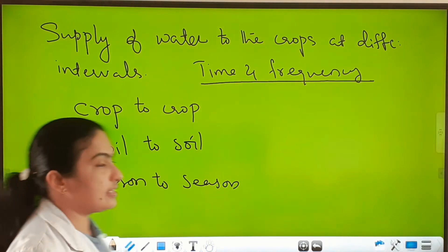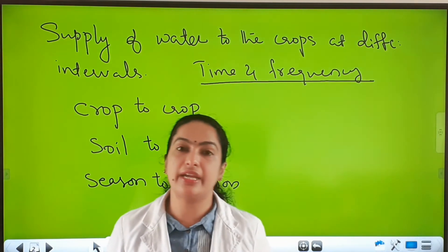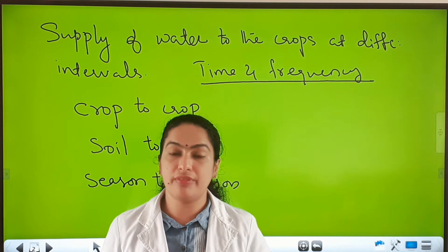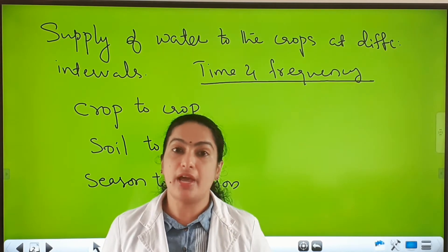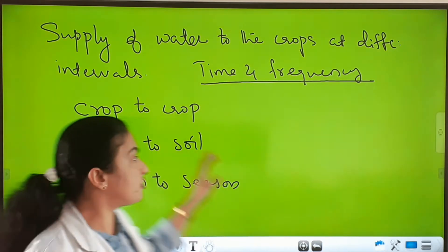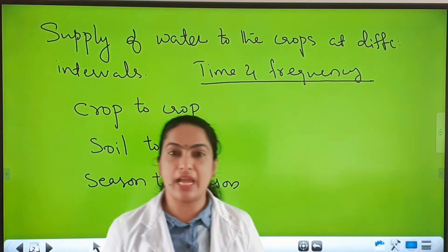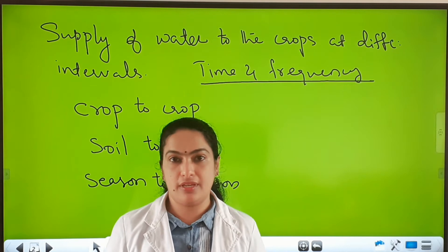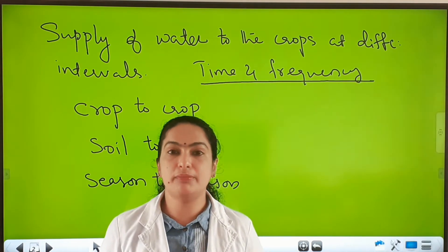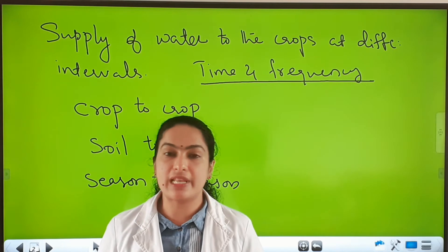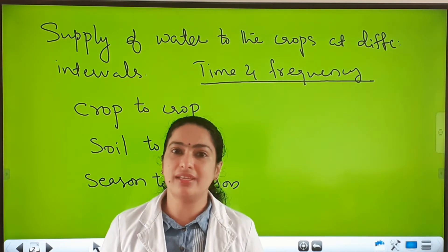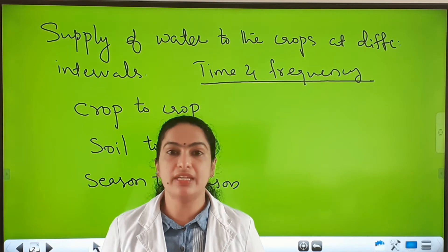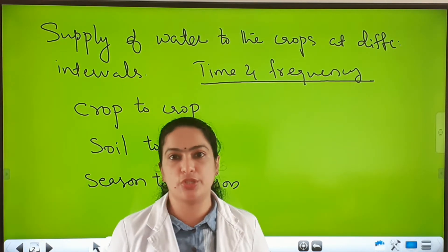Some crops such as cereals — like rice, wheat, etc. — need stagnant water. So farmers need to supply more water to such crops, and the time and frequency of irrigation varies from crop to crop. More water is needed by cereals, but some other crops like vegetables need only a small amount of water.